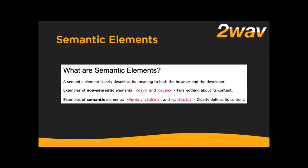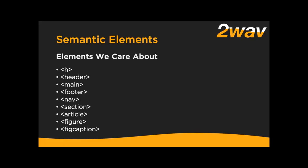Semantic elements are elements that convey what they are — not divs or spans, but elements that say 'I'm a table,' 'I'm a link,' 'I'm a button.' The most important is the h element — h1 through h6, the heading elements. Then header, main, and footer, which are kind of self-explanatory. You can only have one main element on the page, but any number of headers and footers.